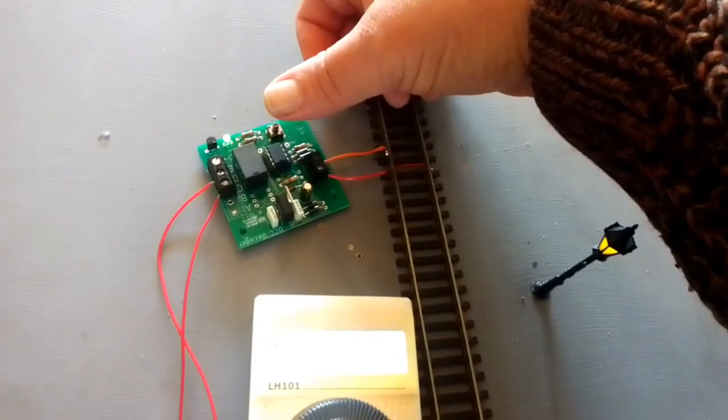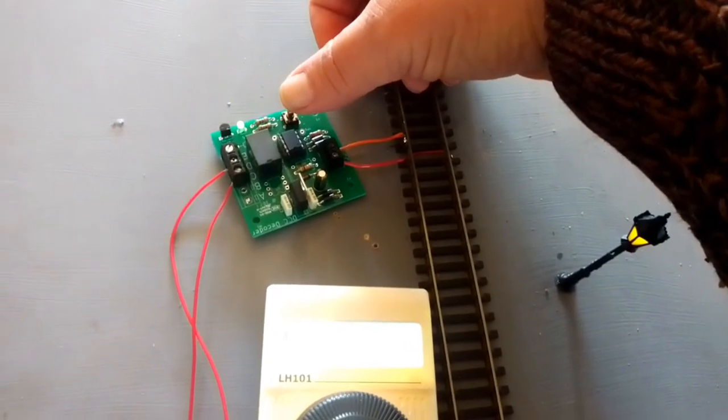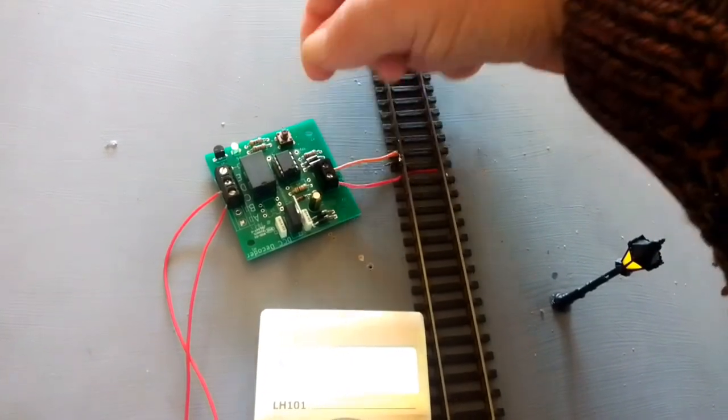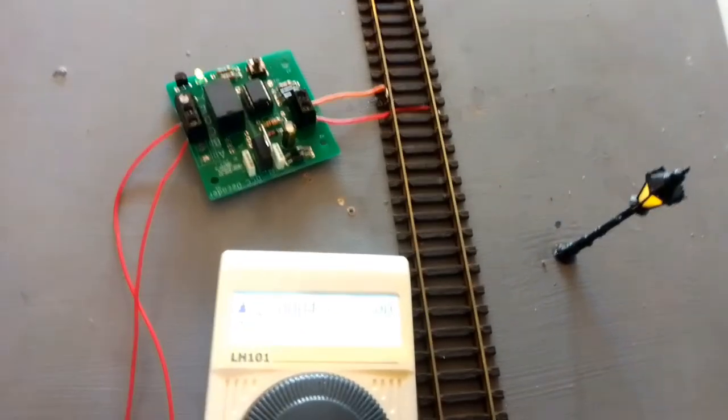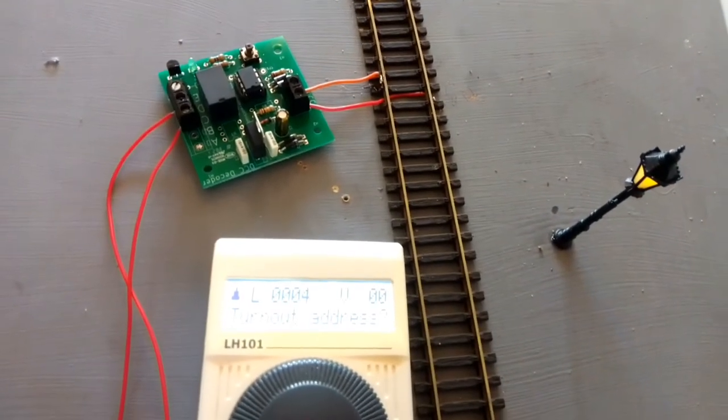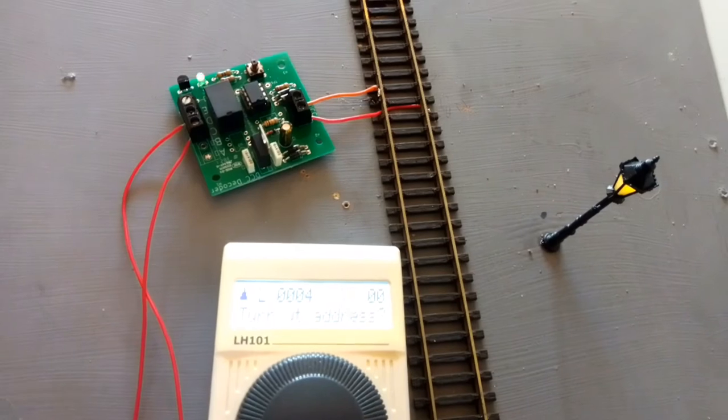It's very simple to program the decoder board. All you need to do is press this push button. That makes the green LED flash. You now send the accessory command, and it will remember that as its address.